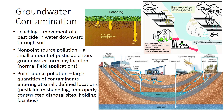Non-point source pollution, as a result of normal applications on a field, orchard, or other wide area over time, occurs when a small amount of pesticide enters groundwater from any location. Point source pollution, due to pesticide mishandling or from improperly constructed disposal sites or holding facilities, would include large quantities of contaminants entering groundwater at small, defined locations. Pesticides that are more mobile in the soil and are resistant to degradation are more likely to be found in groundwater. Shallow water tables beneath treated areas are more susceptible to contamination because pesticides pass through less soil and therefore do not degrade much.